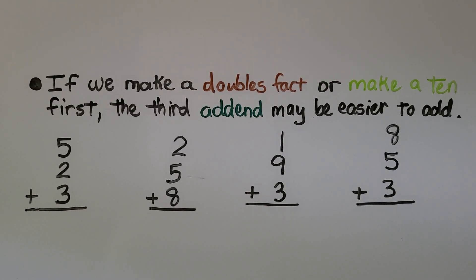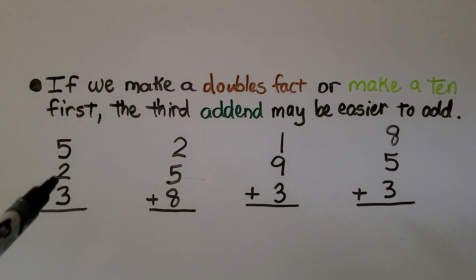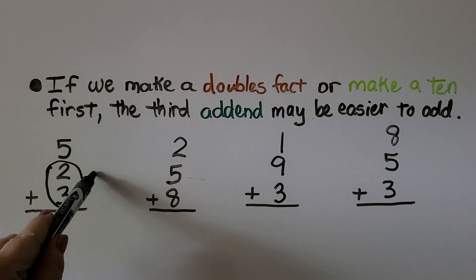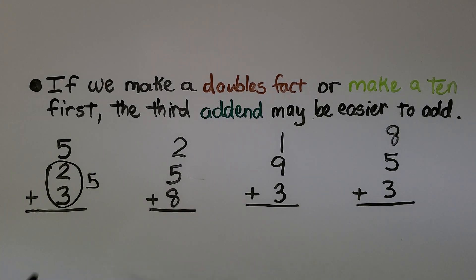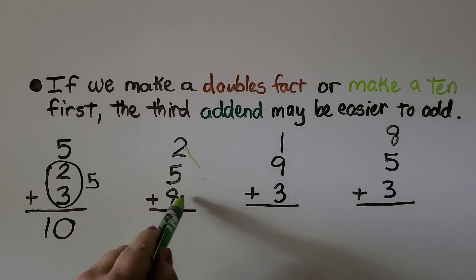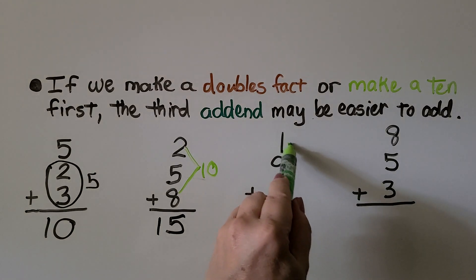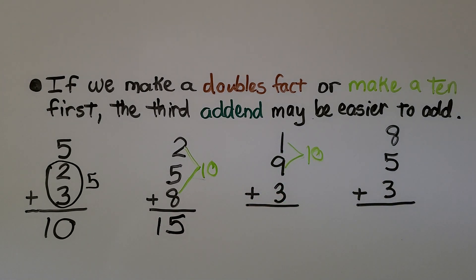If we make a doubles fact or make a ten first, the third addend may be easier to add. For five plus two plus three, if we add the two plus three first it makes five, giving us the doubles fact five plus five, which equals ten. For two plus five plus eight, the two and the eight make a ten, then we add the five to get fifteen. For one plus nine plus three, one and nine make a ten, then we add three to get thirteen.